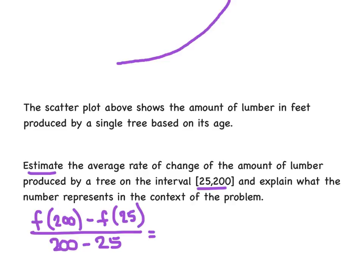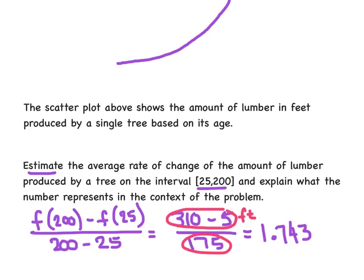Now this is estimating, so we might come up with slightly different values. But what I was thinking was here at about 200, it looks like the feet, it's a little over 300. So maybe like 310 minus. And when the age was 25, it's a very low number. I'm going to say it's not zero, so I'm going to just say a 5. But again, we're estimating, so we could maybe argue on what that value should be. And then 200 minus 25 is going to give me 175, which, when rounding to three decimal places, gives me 1.743. Now let's talk about the units on that particular number. Both numbers I had here in the numerator were measured in feet, and specifically hundreds of feet, whereas this number here was measured in, it represented the age of the trees, which was in years. So that's 1.743 feet, 100 feet per year.